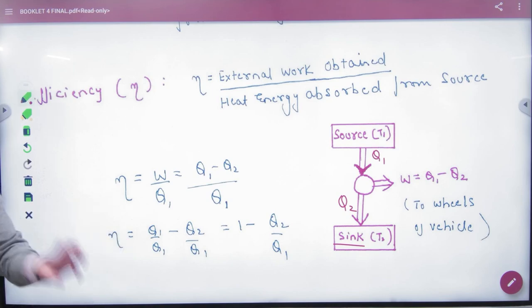We are taking work from work done. The car is running. This is what is working. The car is working on work, Q1 minus Q2.